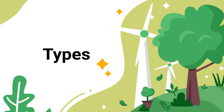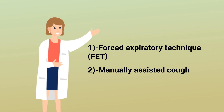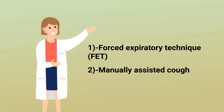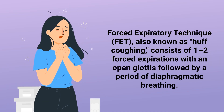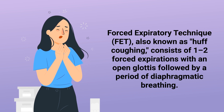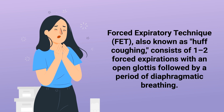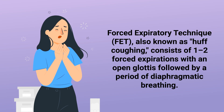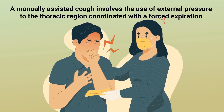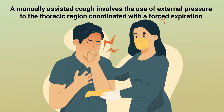There are two types that fall under this category: forced expiratory technique and a manually assisted cough. The forced expiratory technique, also known as huff coughing, consists of one to two forced expirations with an open glottis followed by a period of diaphragmatic breathing. A manually assisted cough involves the use of external pressure to the thoracic region coordinated with a forced expiration.